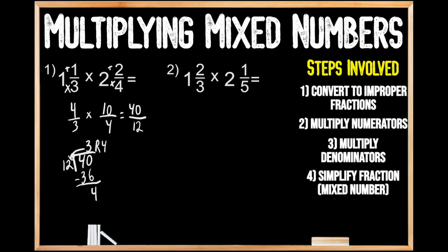So when we divide 40 by 12, we get 3 with a remainder of 4. We write out our mixed number: the 3 represents 3 whole groups, so it's the whole number part. Our denominator hasn't changed — it's still 12 — and our remainder of 4 becomes our numerator. But we can simplify the fraction part further. We record the 3 whole number, then divide both 4 and 12 by 4, since both are multiples of 4. Dividing 12 by 4 gives us 3, and 4 by 4 gives us 1, for 1 third.